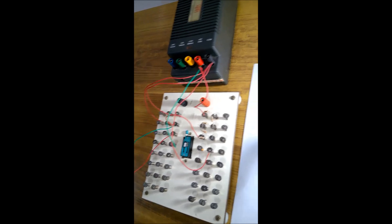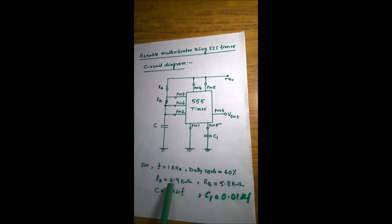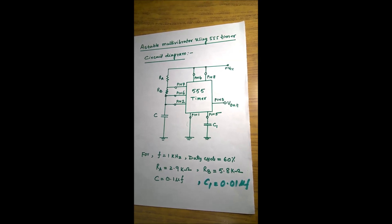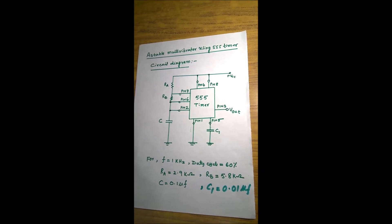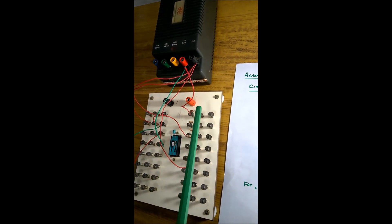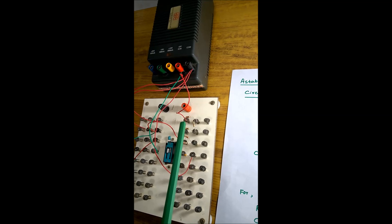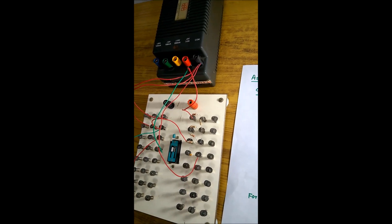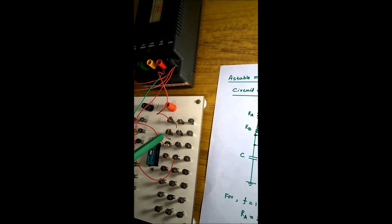Next, RA is connected between pin 8 and pin 7, and its value is 2.9 kilo. Since exactly 2.9 kilo is not available in the lab, we connected three resistances in series: one 2.2 kilo, one 560 ohm, and one 100 ohm. Together these three resistances give approximately 2.9 kilo, which is applied between pin 8 and pin 7.